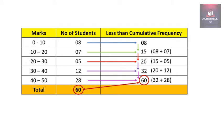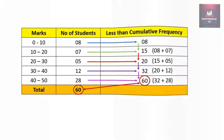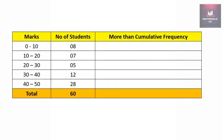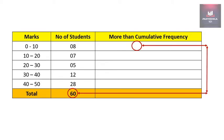Now let's understand how to calculate more than cumulative frequency. For more than cumulative frequency, the first entry will be the total of frequency. Here the total of frequency is 60, so that will be the first entry.